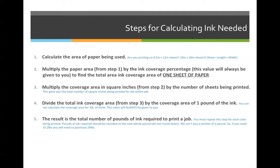The first thing we're going to do is calculate the area of paper being used. Are we going to print on 8.5 by 11 sheets, 24 by 36 inch sheets? To calculate the area, we multiply the length times the width. So if we're printing on 8.5 by 11 sheets, we multiply 8.5 times 11 to get the total square inches. If we're printing a 24 by 36 inch poster, you'd multiply 24 by 36 — it gives you a value in inches squared.